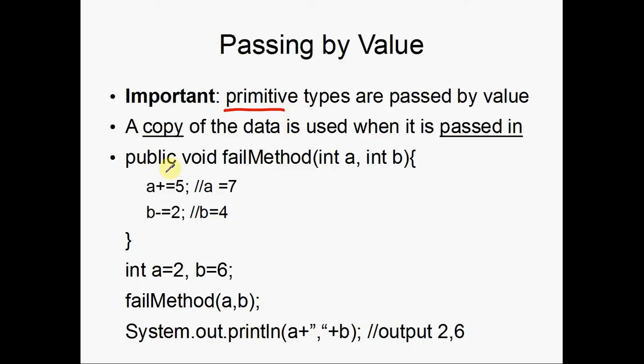So, notice here that we have a method called fail method, and it takes in two numbers, a and b. And it simply adds 5 to a, and subtracts 2 from b. So, the result is as follows in the comments. Notice that when we try to use fail method here, when we declare an integer a to be equal to 2, and an integer b to be equal to 6, when we call the method.